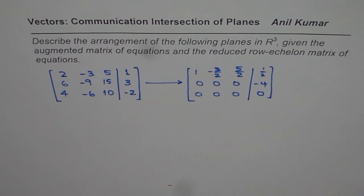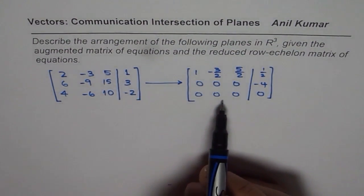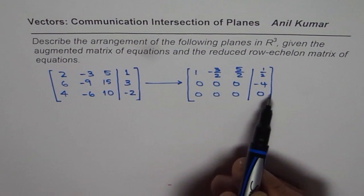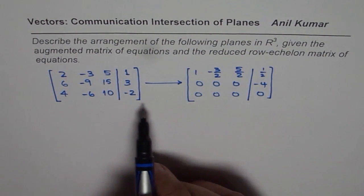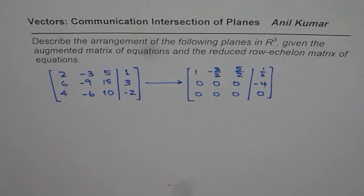So what we have here is an augmented matrix and if you perform the row reduction in proper order then you may get this kind of a solution. Now from here what do you infer? That is what we are trying to understand.